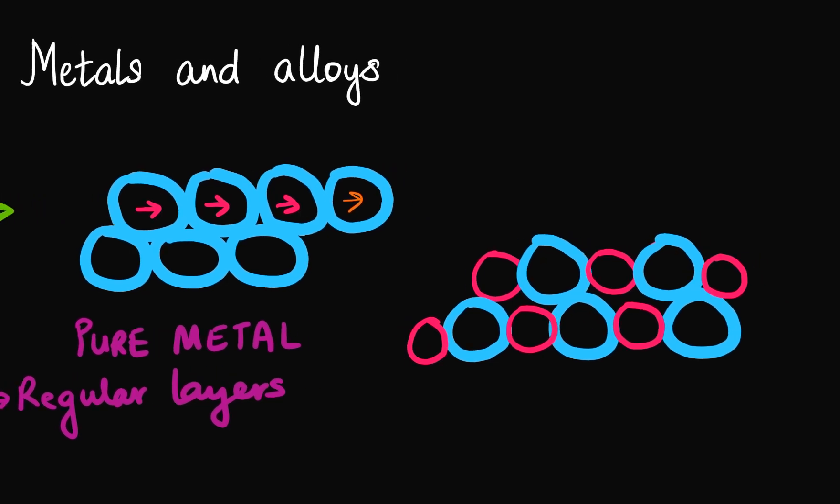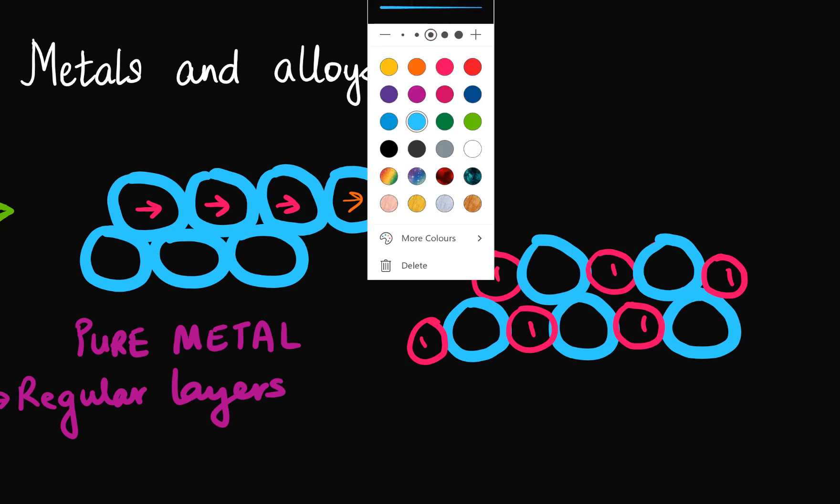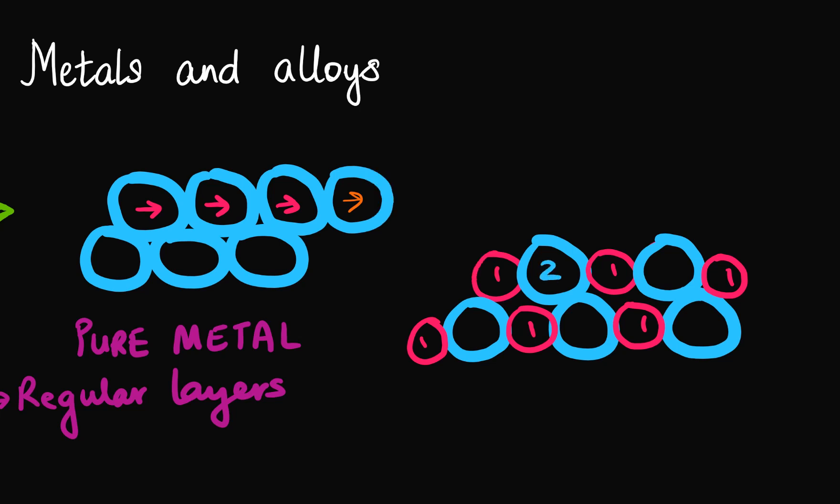So imagine that this is something that the structure of an alloy would look like. Now what happens is because the size of the metal atoms is different. Like the first metal atom, suppose I name this as metal atom of type 1, now the size of the metal atom type 1 is different from the size of the metal atom 2.